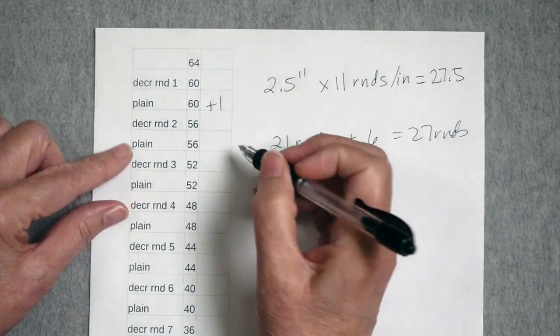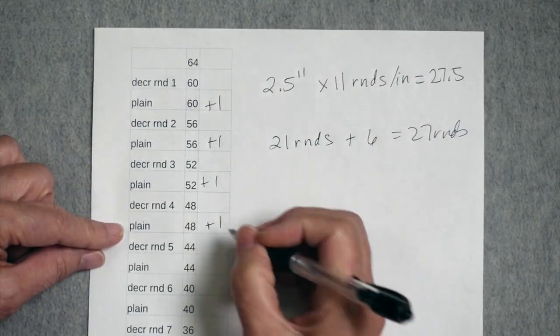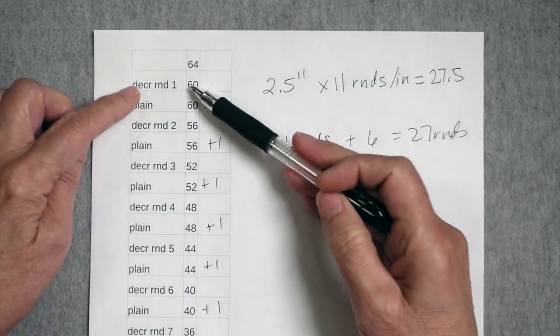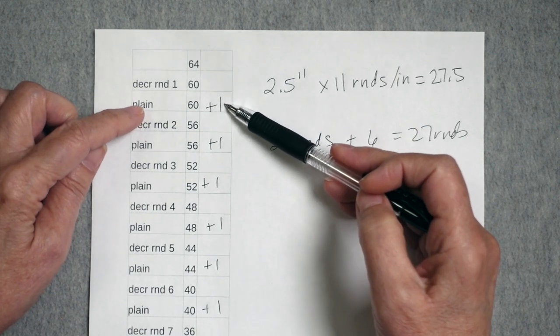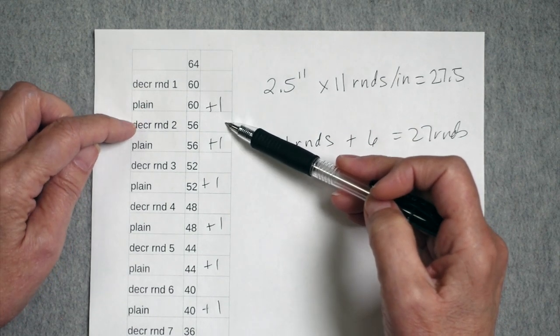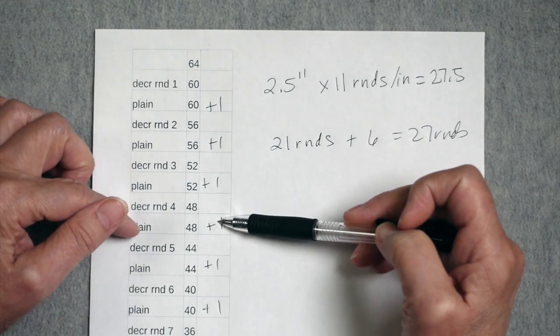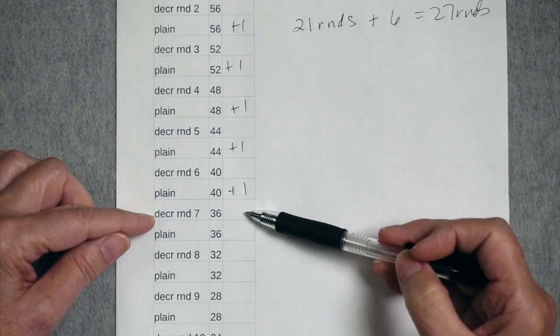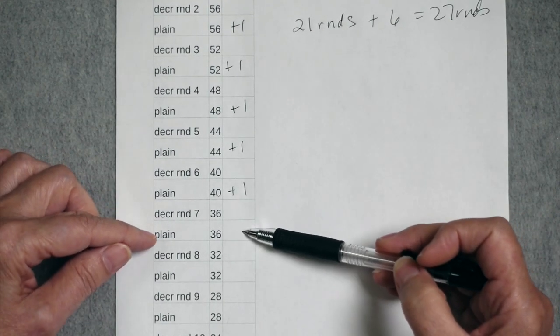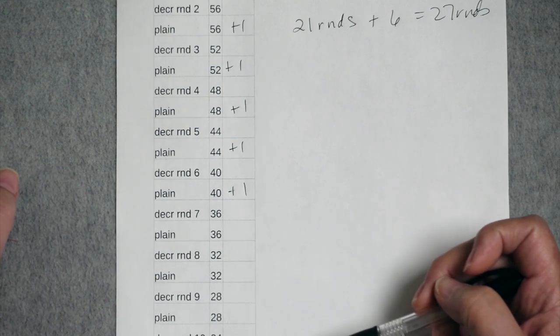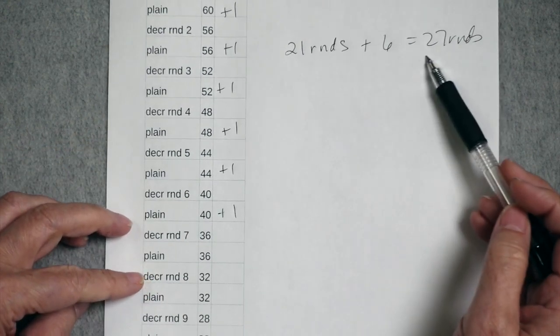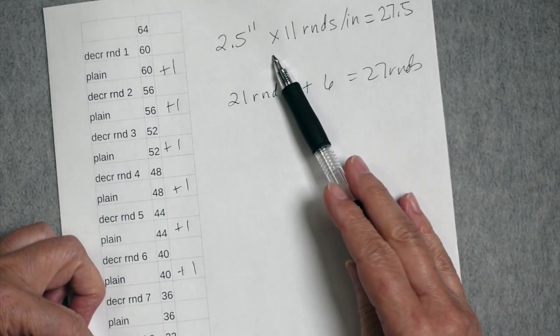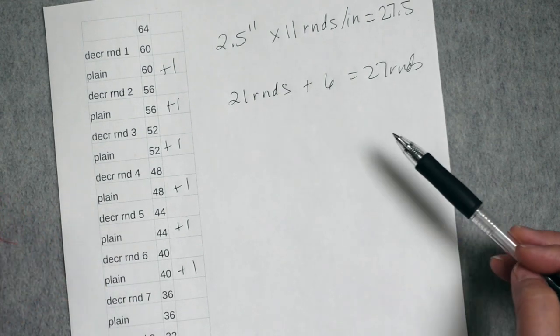So I'd add an extra one here, and I would do this until I had used up all of the extra ones. So this will tell me that after I work the first decrease round, I'm going to work two plain rounds after, and then I'm going to work two plain rounds after each of these initial decrease rounds until I get to here. And when I have 36 stitches, then I will just shift to having one plain round after each of the decrease rounds. And that will give me the length of the toe that I need. And again, I will start the toe when I'm two and a half inches shorter than what I want for the full length of the sock.